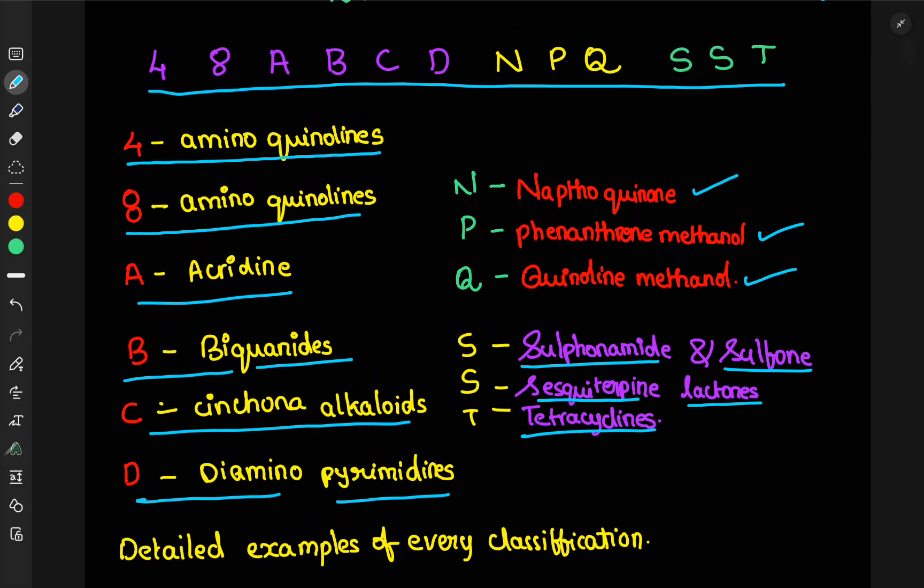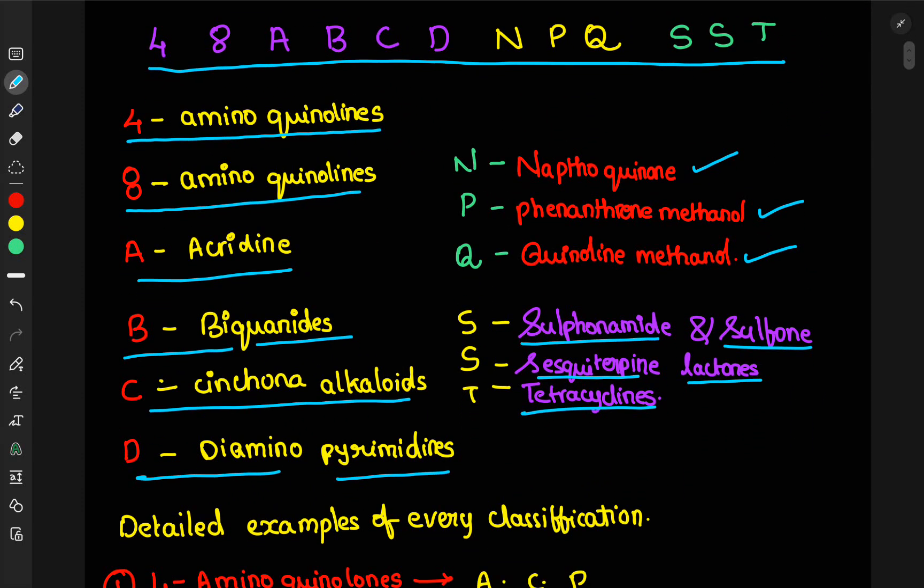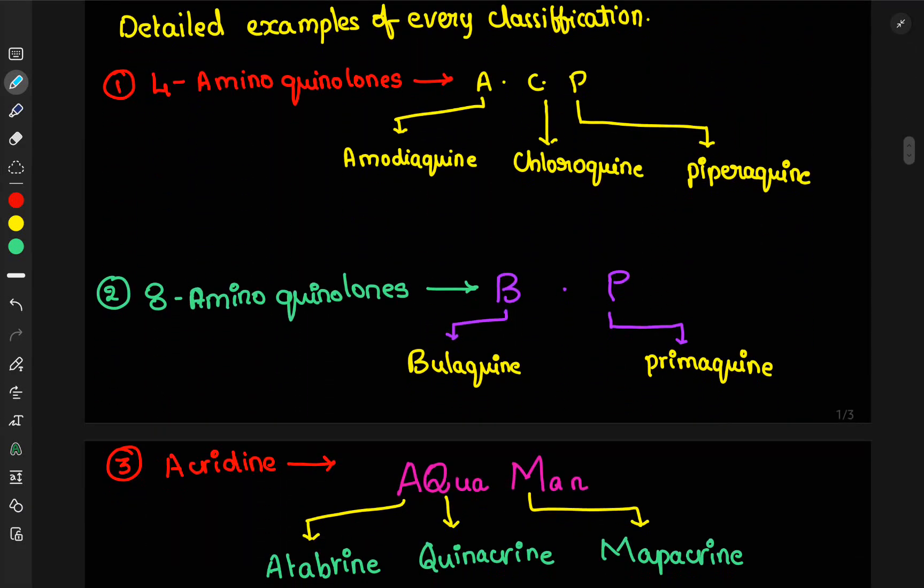These are the major classifications involved in the antimalarial drugs. Now, we will see the important examples that are present in each of the classification. First one, 4-aminoquinolines. You will be remembering these examples by remembering the ACP. A means amodiaquine, C means chloroquine, P means piperaquine.